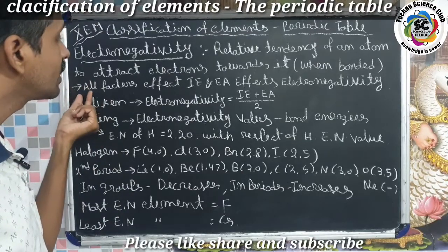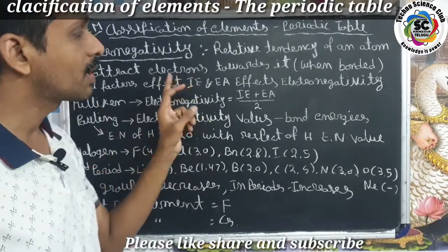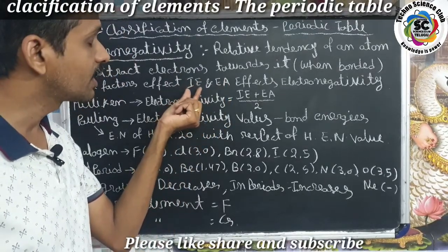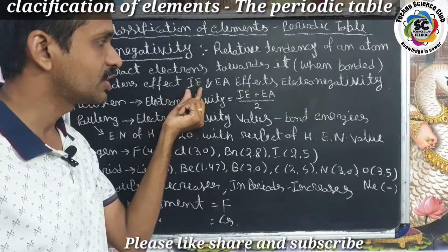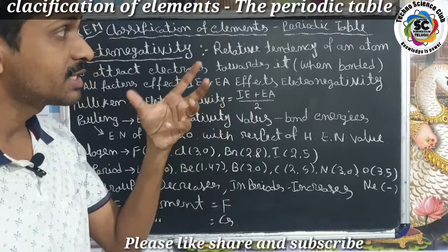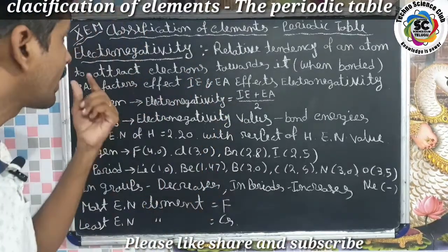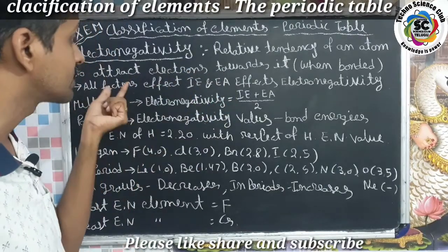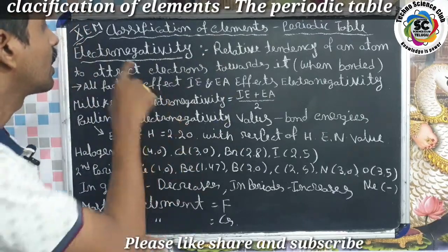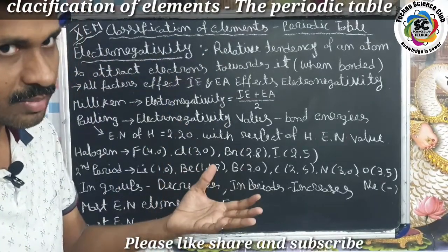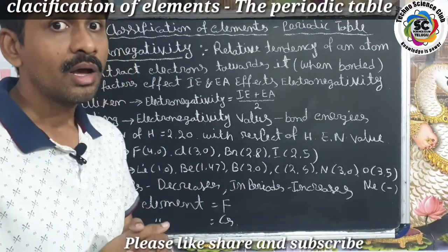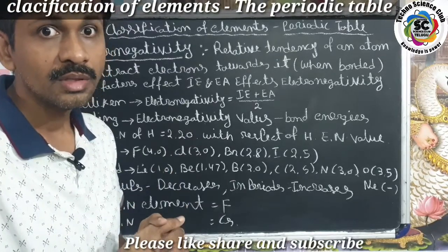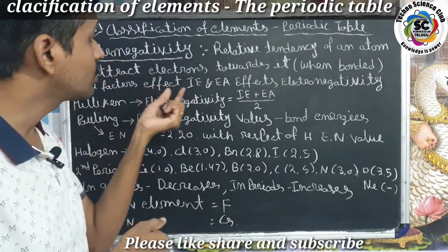Electronegativity is related to ionization energy and electron affinity. Ionization energy is the energy required to remove an electron, while electron affinity is the energy released when an electron is added. Both ionization energy and electron affinity are factors that affect electronegativity. Penetrating power is also a factor affecting ionization energy and, in turn, electronegativity.